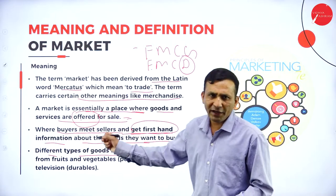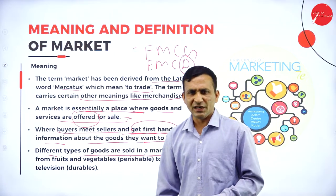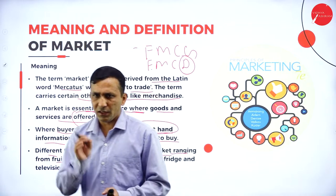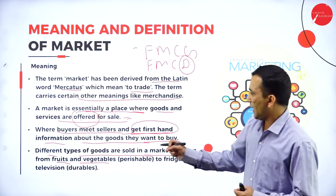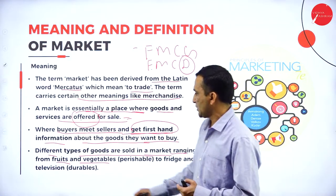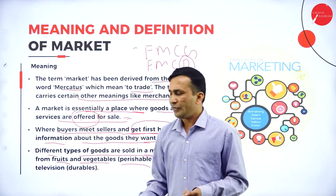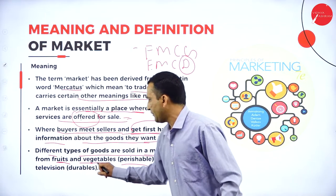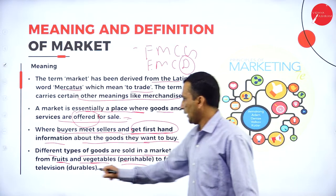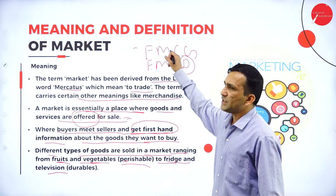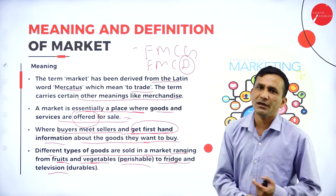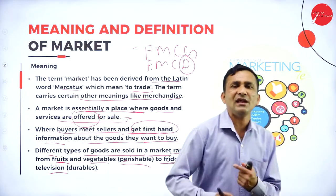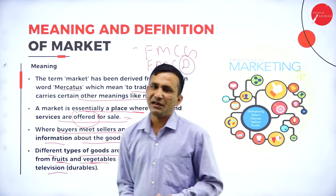There are different products or services that can be offered to the end consumer to fulfill their requirements. Markets range from fruits and vegetables, which have very less life span — these are perishable goods — to products like fridge and television, which come under FMCD. Customers purchase durable goods very rarely because their durability is extended for a certain period.